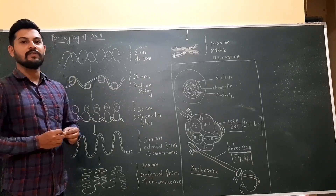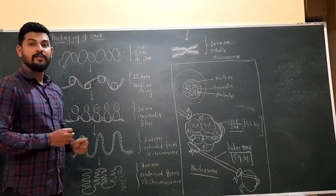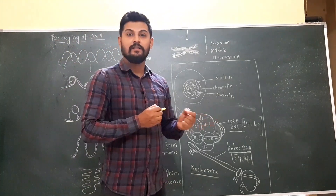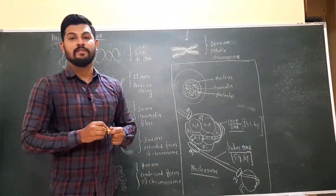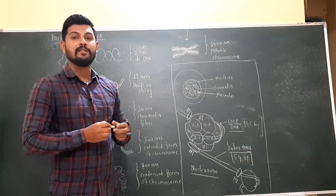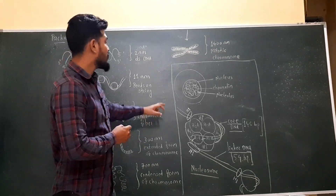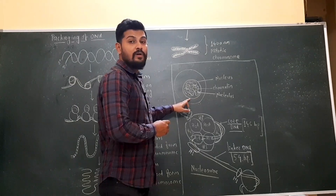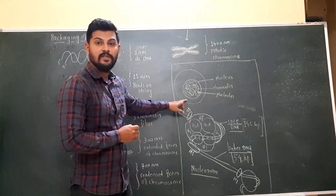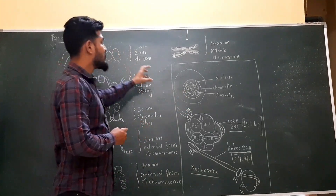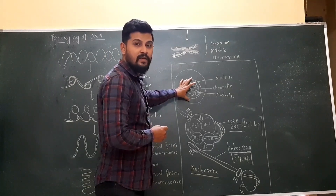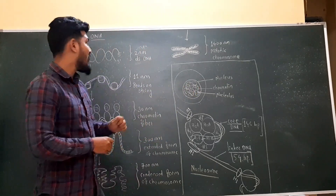Hello friends, in this session we are going to discuss about the packaging of DNA. Do you know what is the length of the mammalian DNA? The length of the mammalian DNA is around 2.2 meters long. Then what is the size of the nucleus of the mammalian cell? The size of the nucleus of the mammalian cell is around 10 raised to minus 6 meters. Such a long DNA is to be placed inside such a small nucleus. It is possible due to the packaging of DNA.